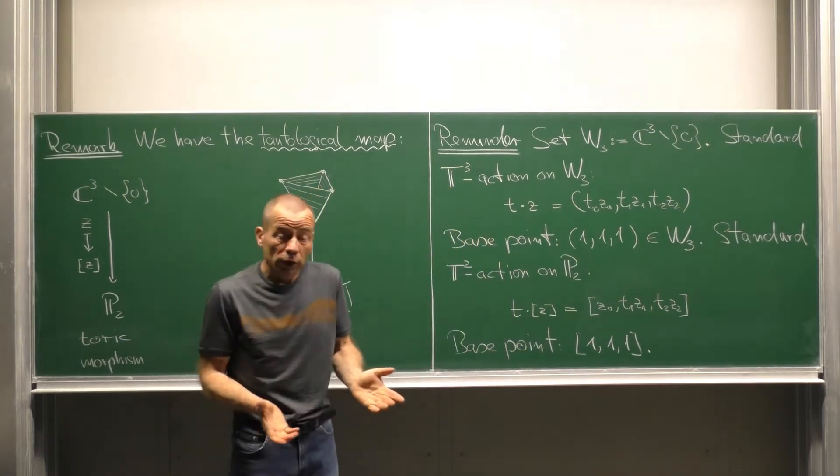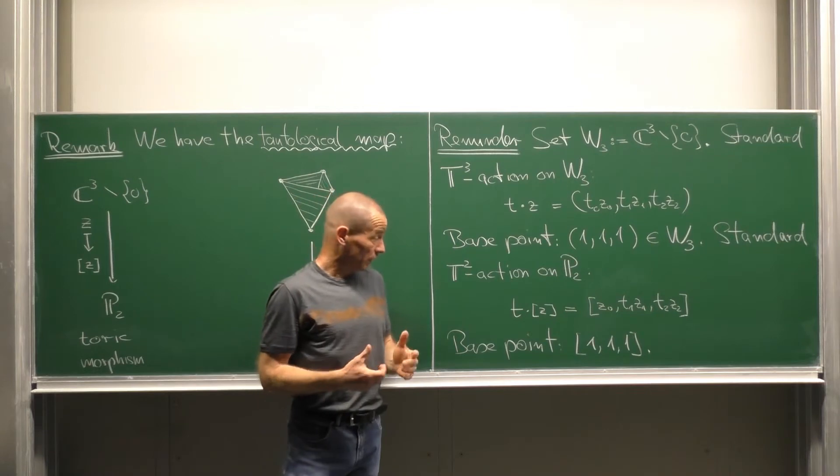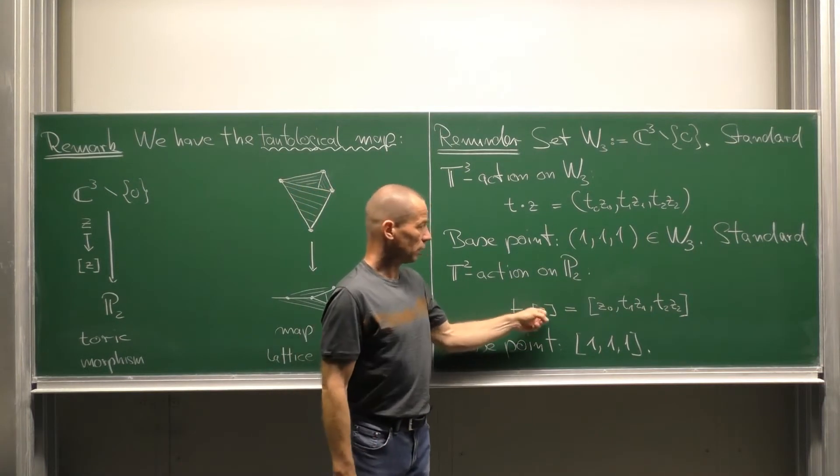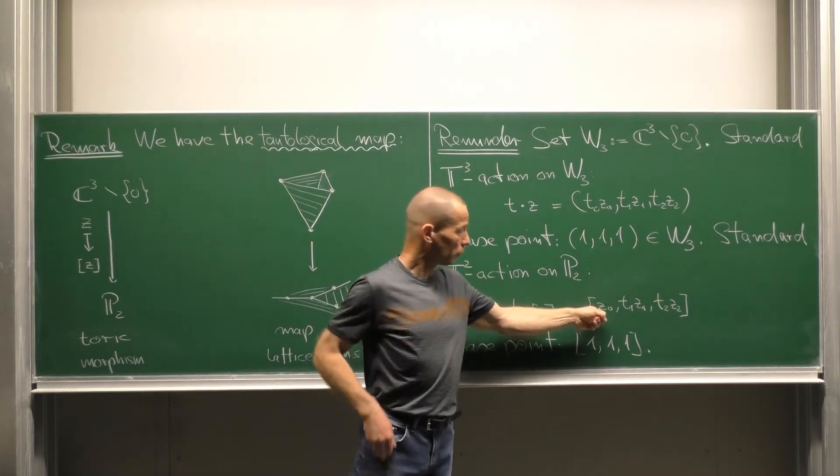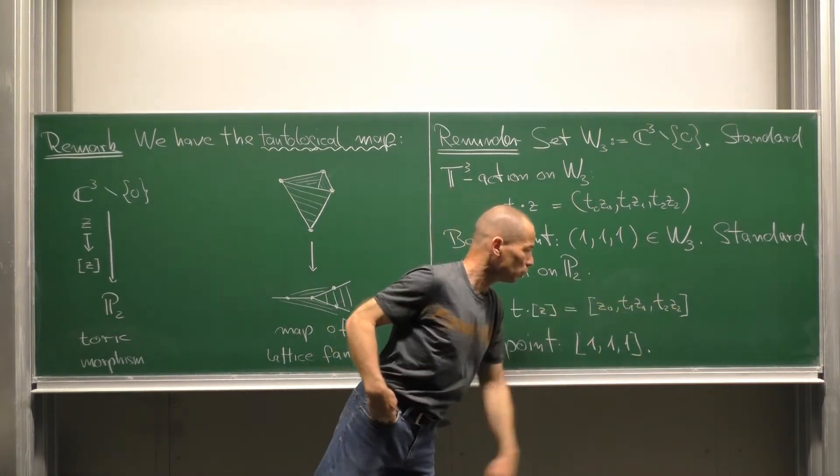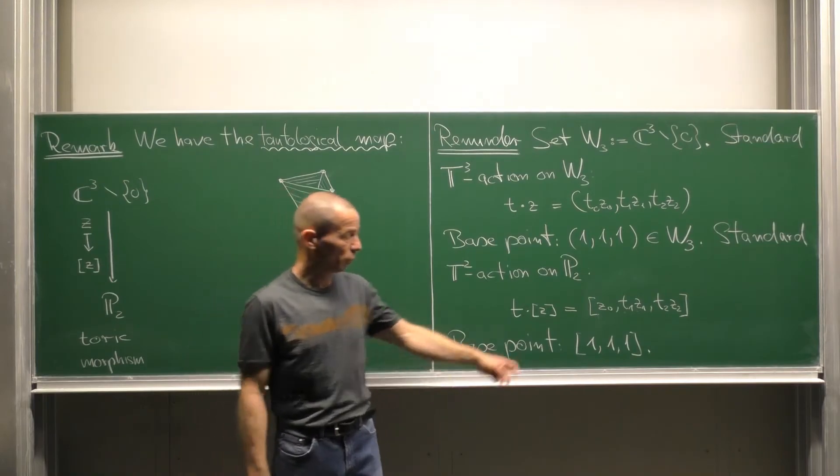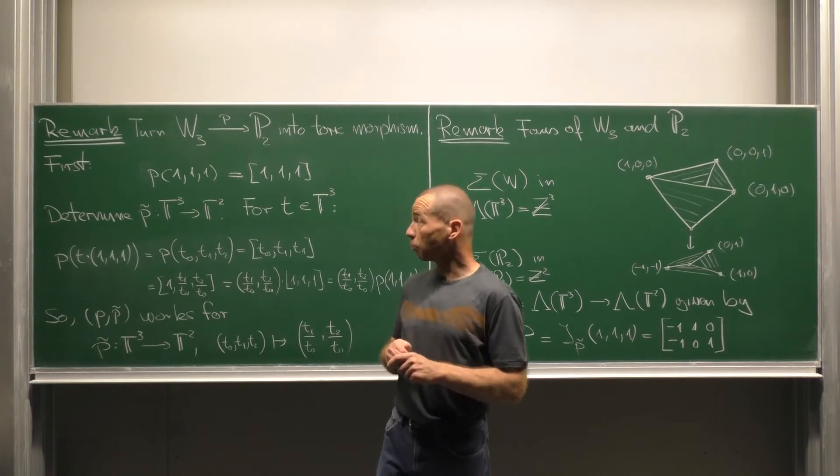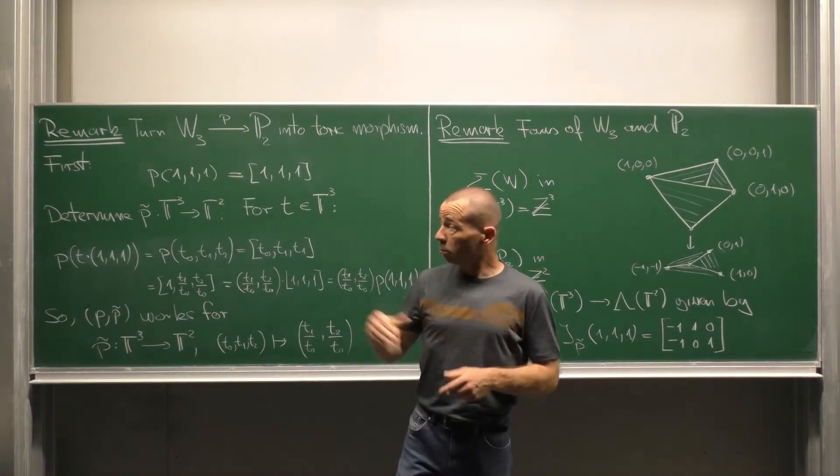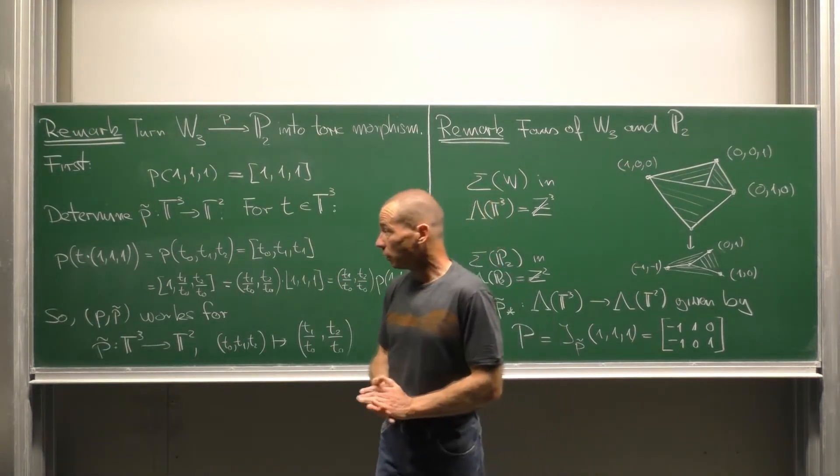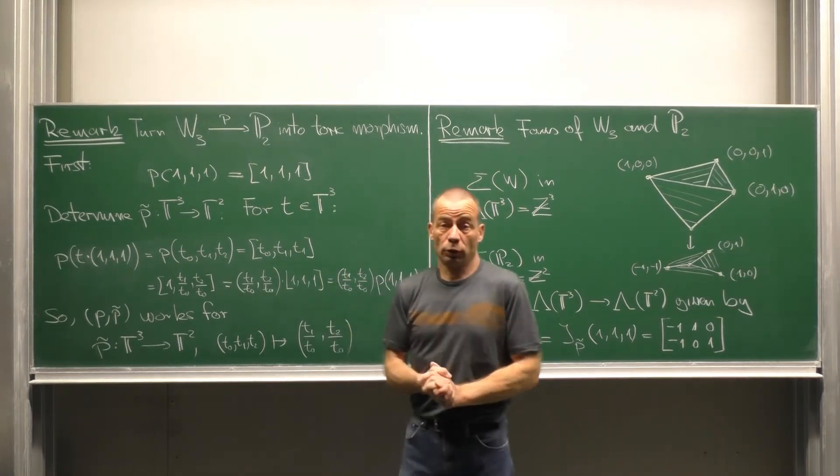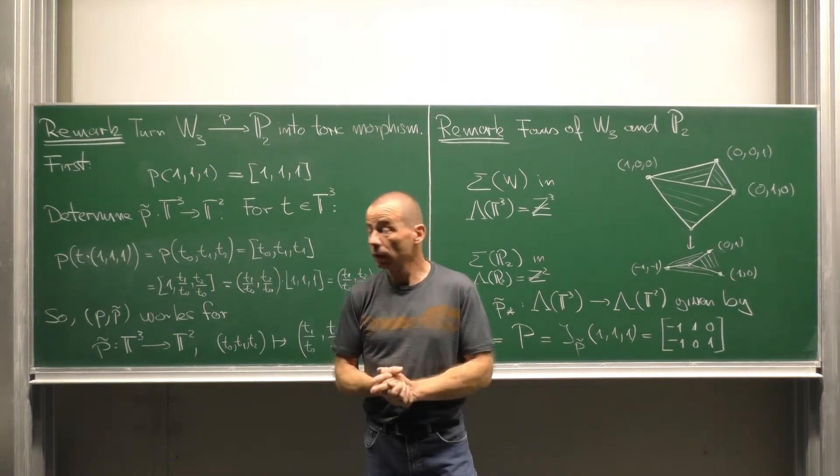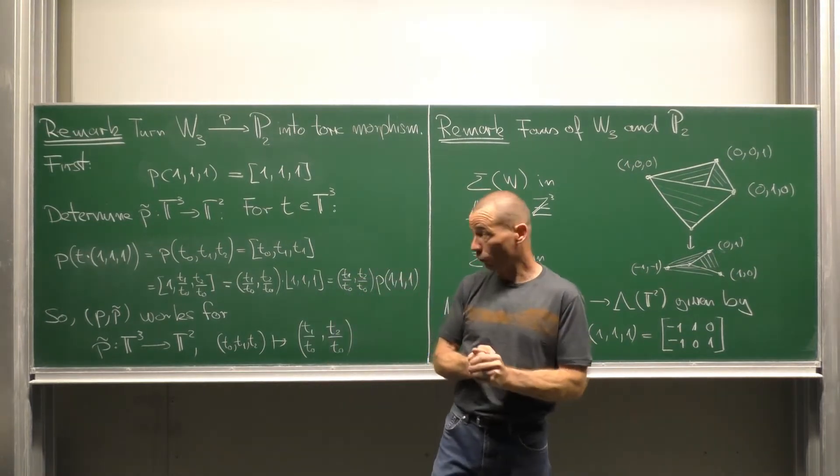Similar on the projective plane we have the standard two-torus action given by T·Z doing nothing in the first coordinate, then T₁Z₁, T₂Z₂ and the base point is the point (1,1,1). We turn the tautological map P into a toric morphism. First observe that P respects the base point. The next task is to determine the accompanying homomorphism of tori, P tilde from the three torus to the two torus.